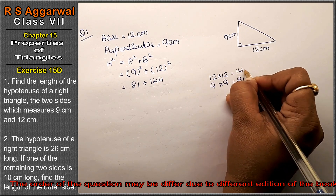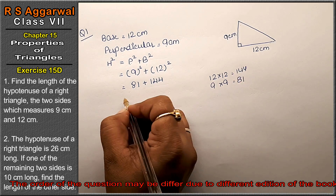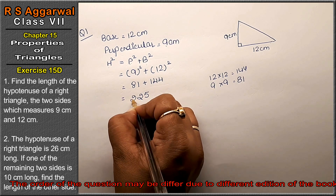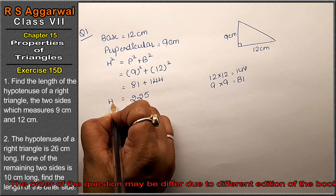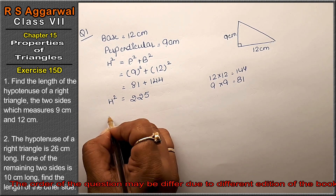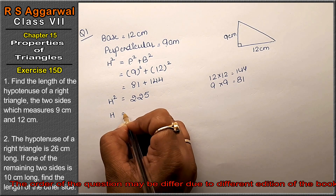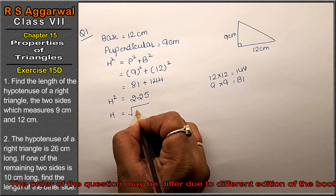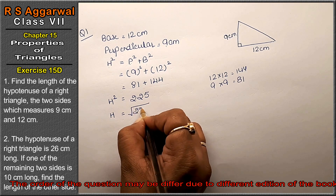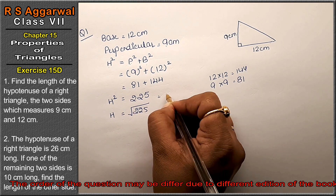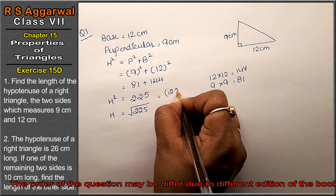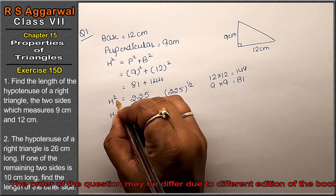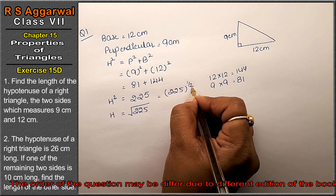Now we calculate: P squared is 81 and B squared is 144, giving a total of 225. So H squared equals 225. We need to find the square root of 225, which can also be written as 225 to the power of one-half.